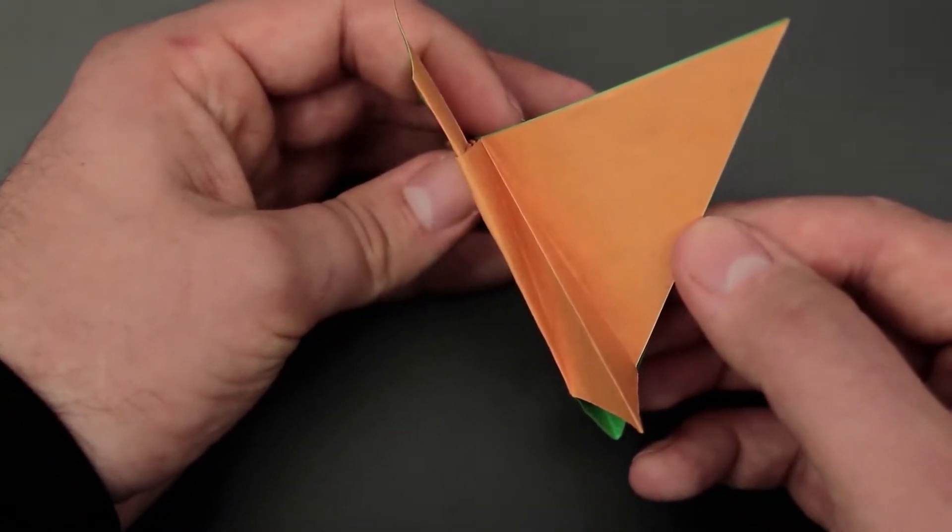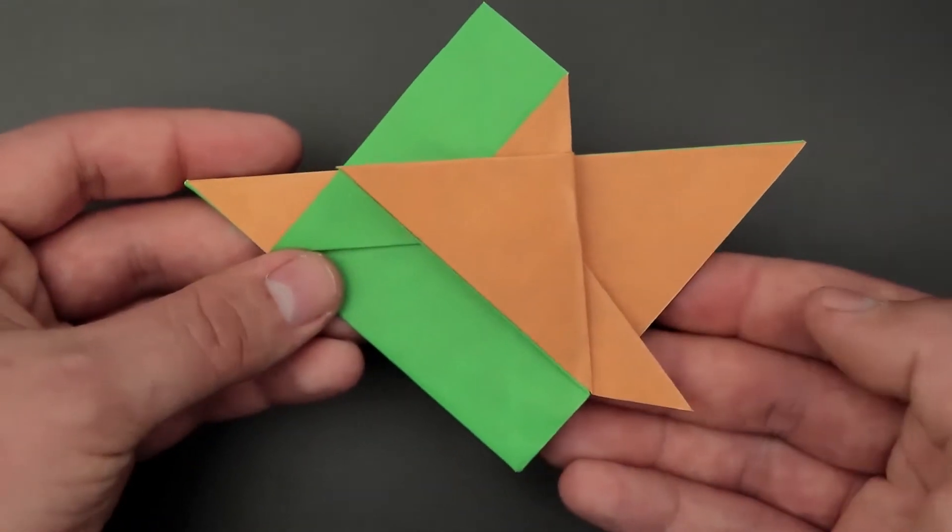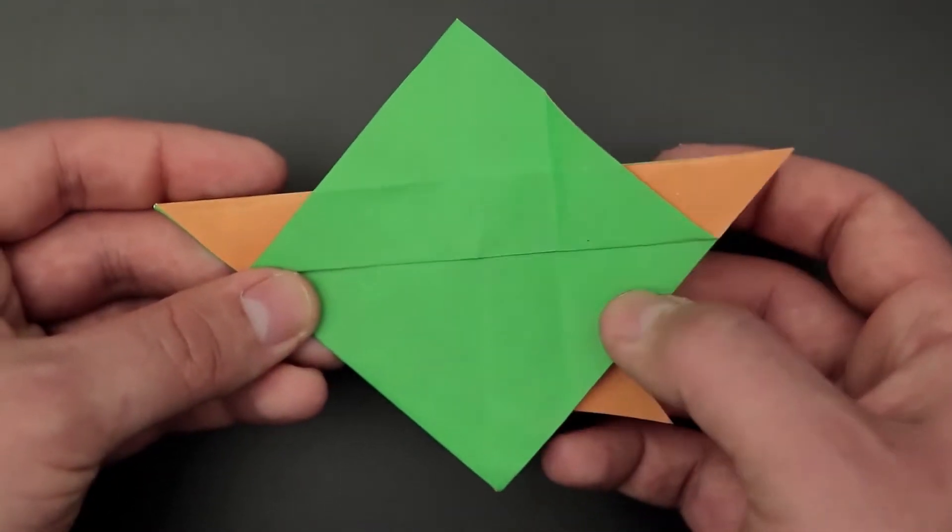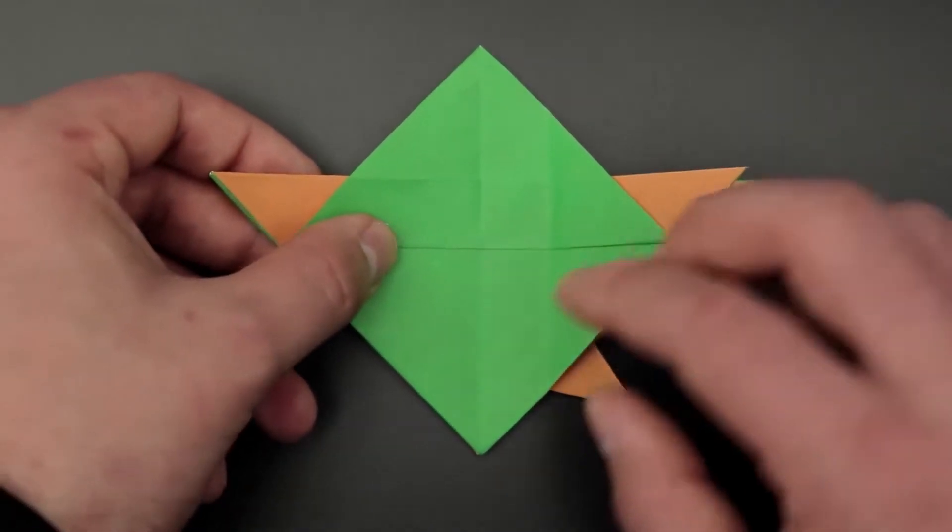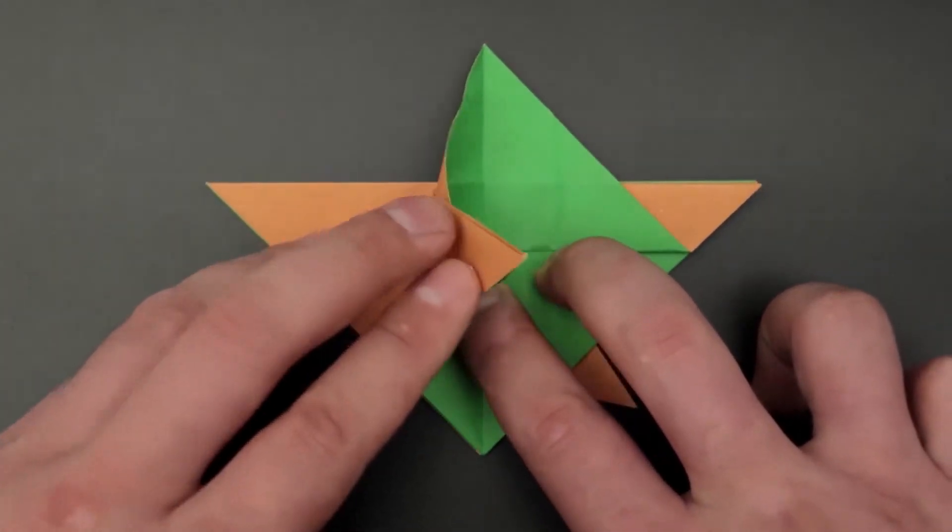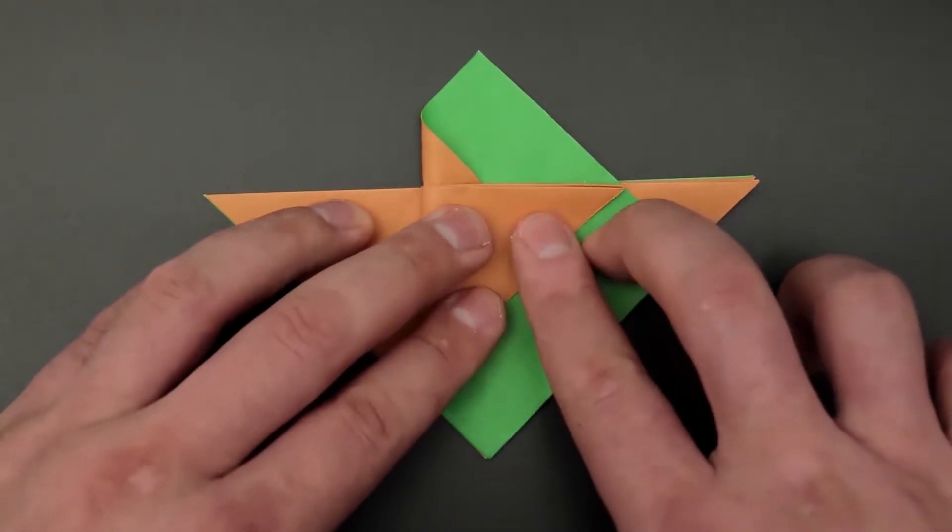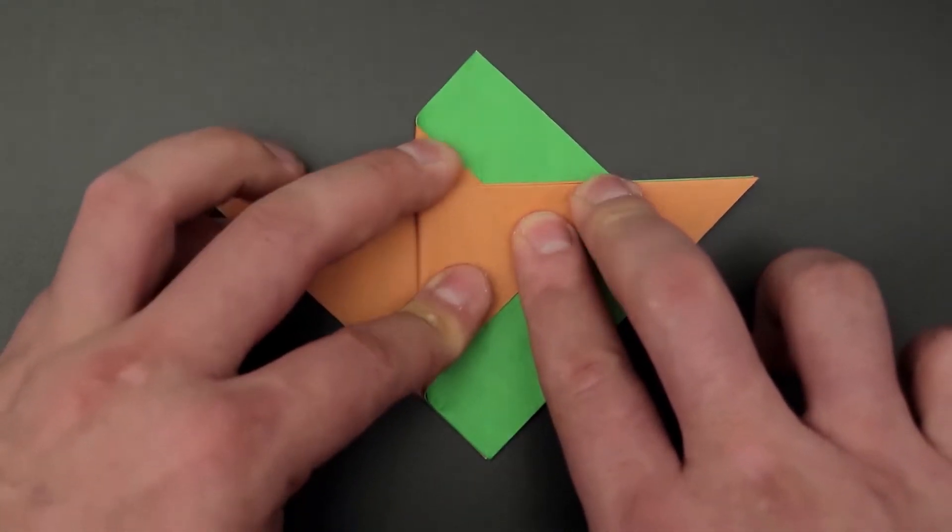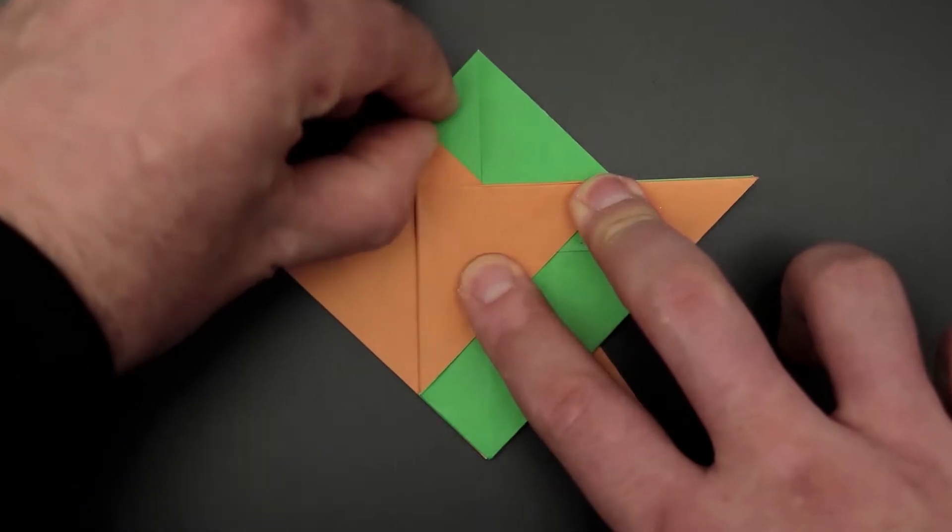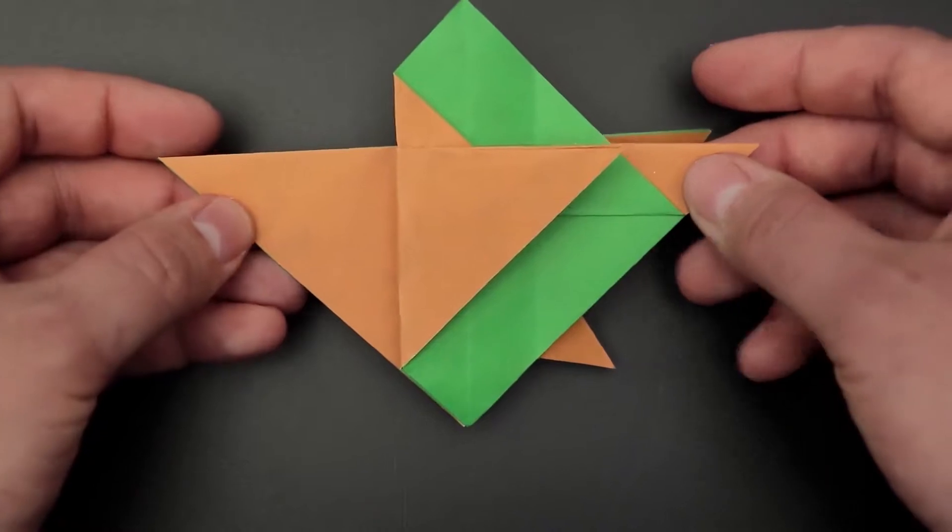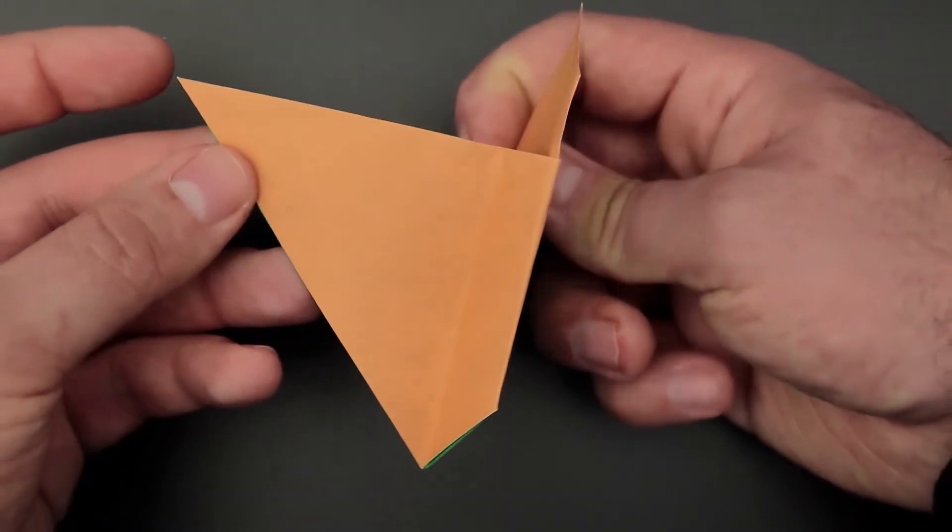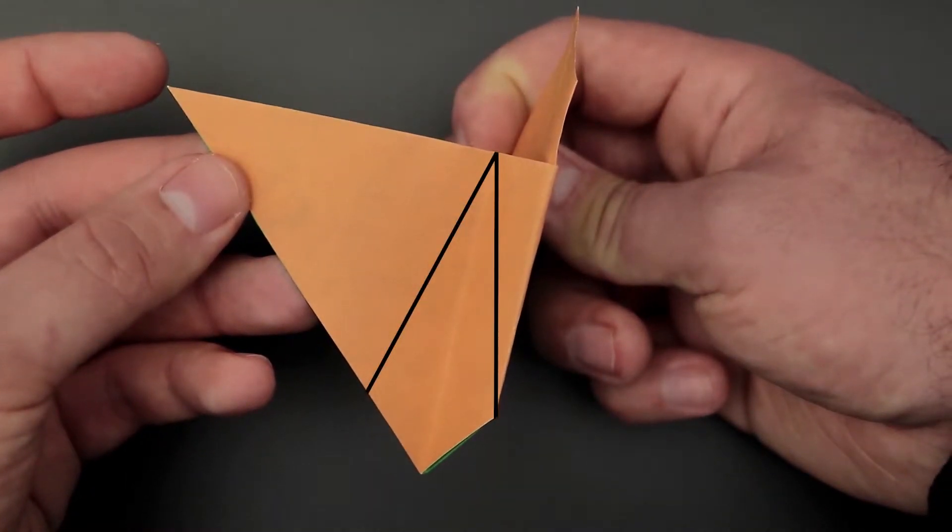We have our diagonal folds. Now we can undo the previous step, and repeat all this on the other side. First we fold the flap, then we open the side, and create those two diagonals.